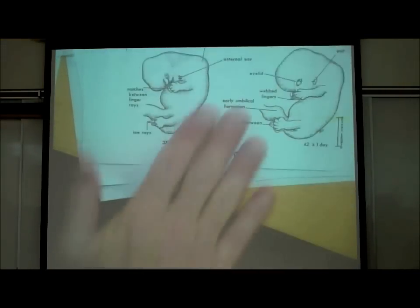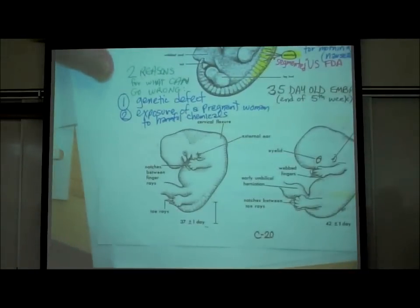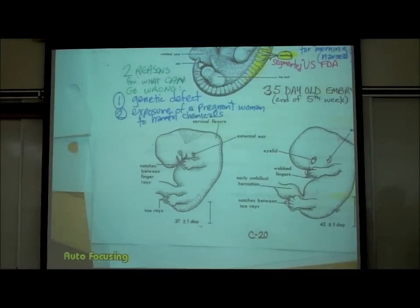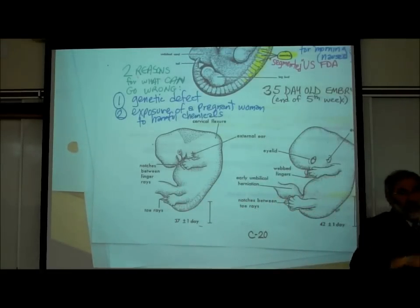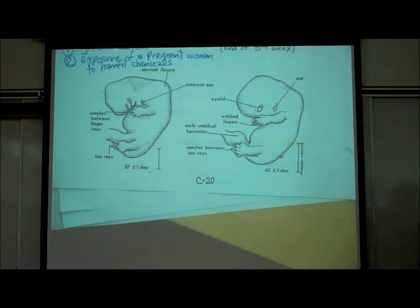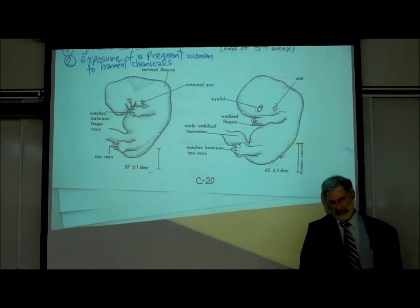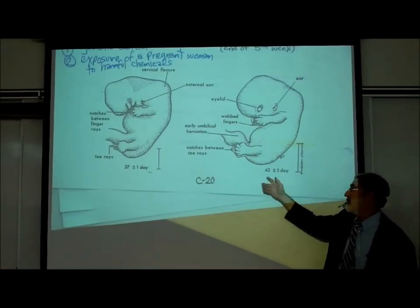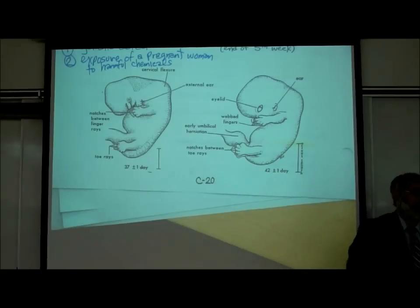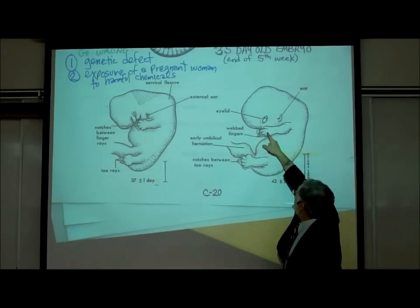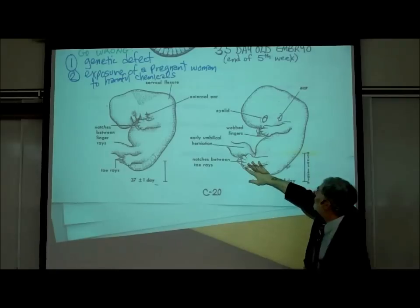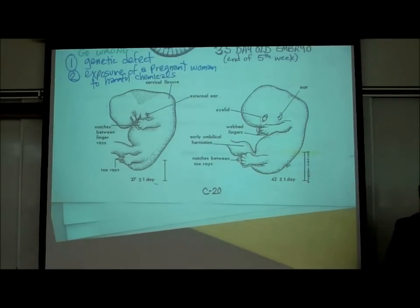The lower left shows a 37-day-old embryo — notice the fingers are starting to form through programmed cell death or autolysis. Here's a 42-day-old embryo — that's the end of the sixth week. Notice we've got an eye forming, an ear, fingers and toes, but the whole front end is growing at a faster rate.